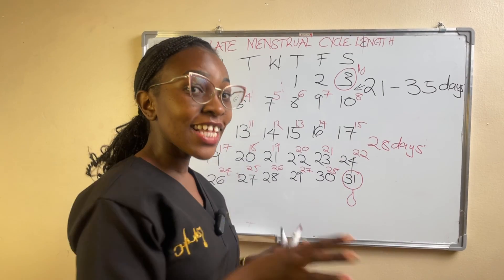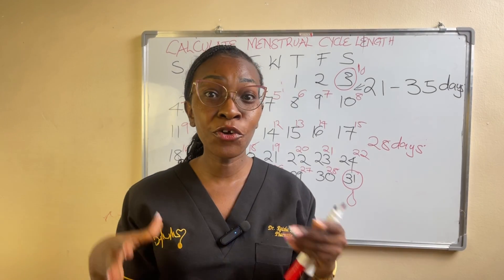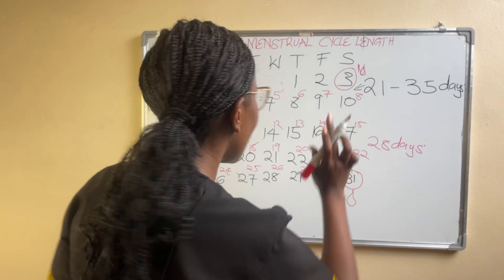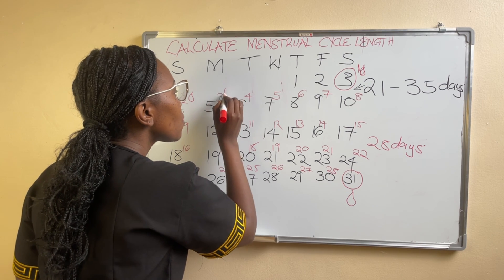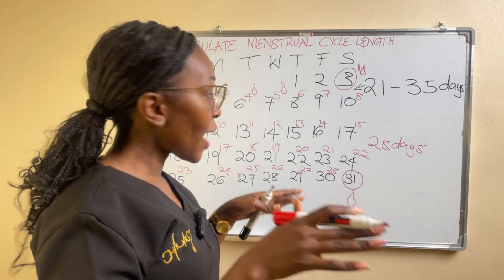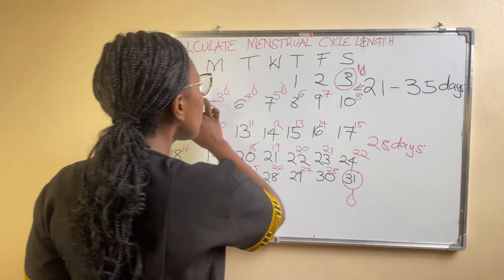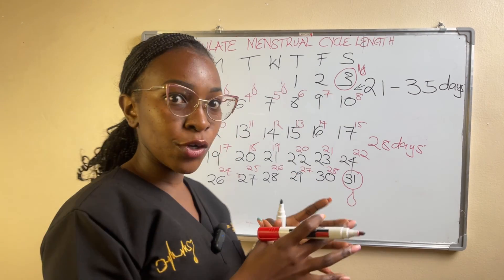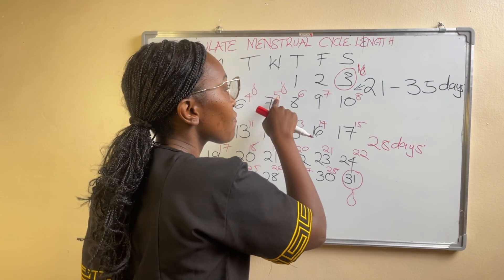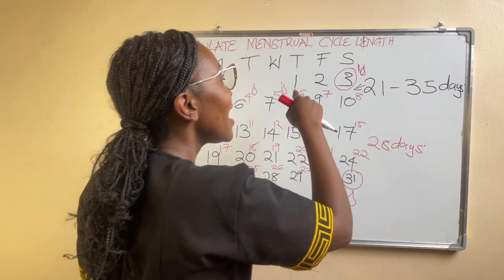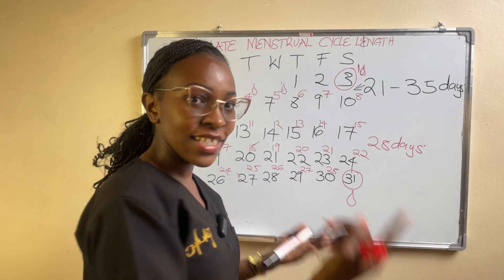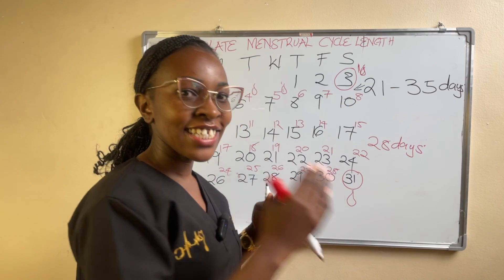I want you to note that there is a difference between menstrual cycle length and period length. This woman was bleeding from day one through day five — so her period length is five days. But her menstrual cycle length continues even after her period stops. If day five is the last day of her bleeding, we continue counting day six, day seven, day eight, and so on — even if she does not have her period on those days.